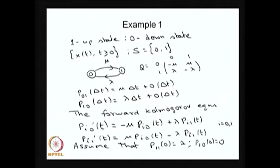Using this, we can write the forward Kolmogorov equation. The forward Kolmogorov equation is easier to work with. The net rate of the system being in state 1 at time t equals all inflows minus all outflows. All positive terms correspond to incoming rates and all negative terms correspond to outgoing rates.